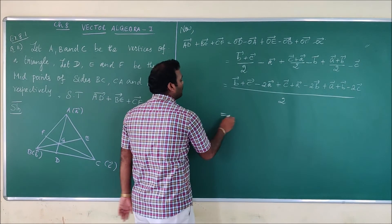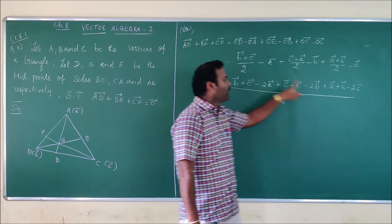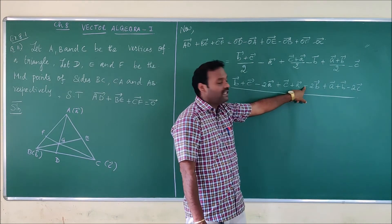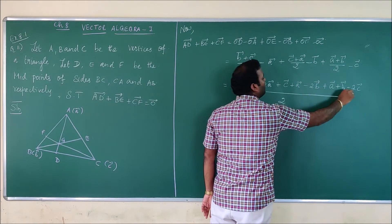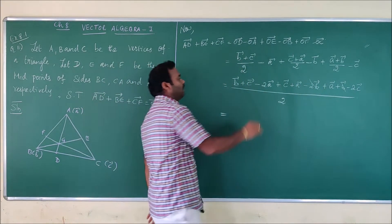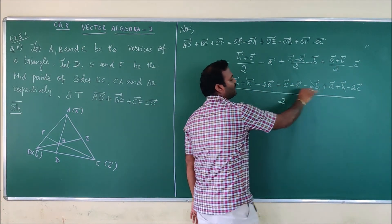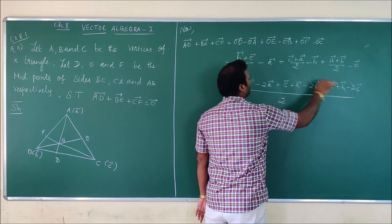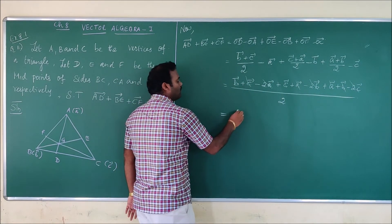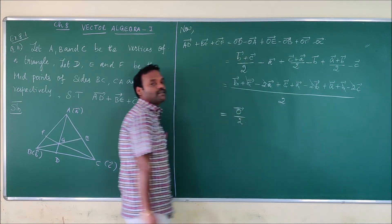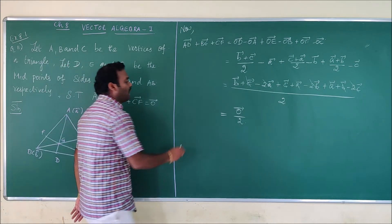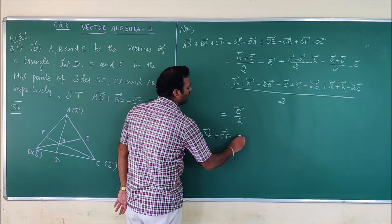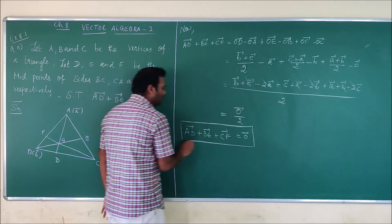When you add all these terms: vector b + vector b gives 2·vector b, and minus 2·vector b cancels it. Vector c + vector c gives 2·vector c, which cancels with minus 2·vector c. And vector a + vector a gives 2·vector a, which cancels with minus 2·vector a. So the numerator is zero vector divided by 2, which equals zero vector. Therefore AD vector plus BE vector plus CF vector equals zero vector, which is what we had to prove.